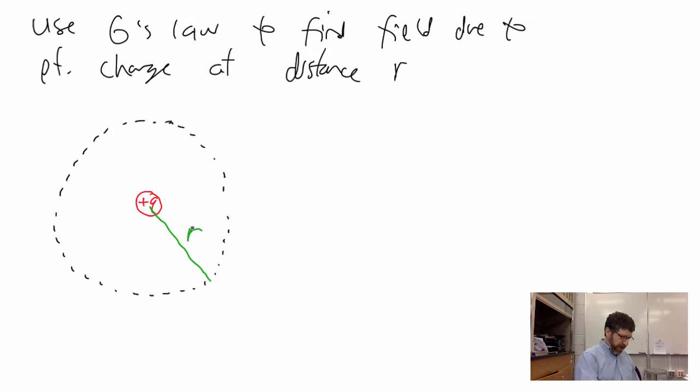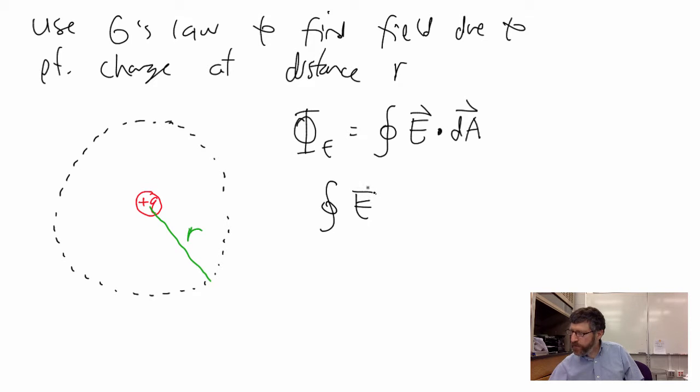So here is Gauss's law. The integral of E dot dA over the whole closed surface is equal to q in over epsilon naught. And epsilon naught is the permittivity of free space. And see a prior video to find out what epsilon naught and its value.